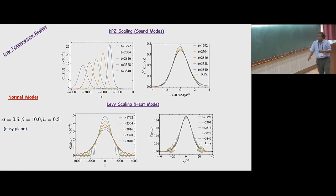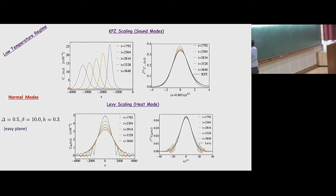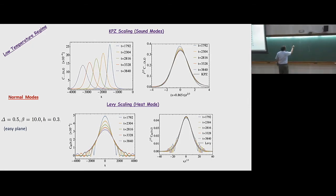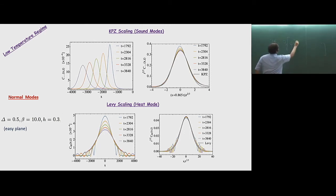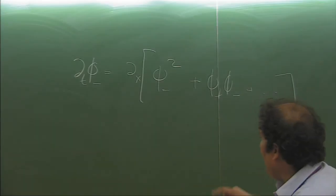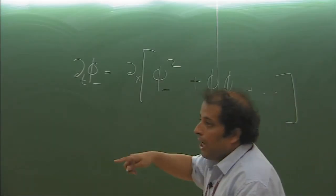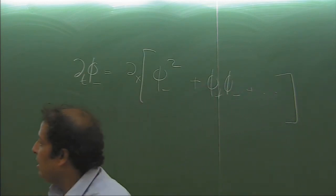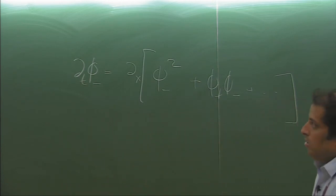Given the G matrix structure, even if there are various terms, there is definitely a φ−² term, so the leading behavior is KPZ. For φ₀, the right-hand side has φ+² and φ−² — nonlinearity coming from those modes gives the Lévy heat mode.